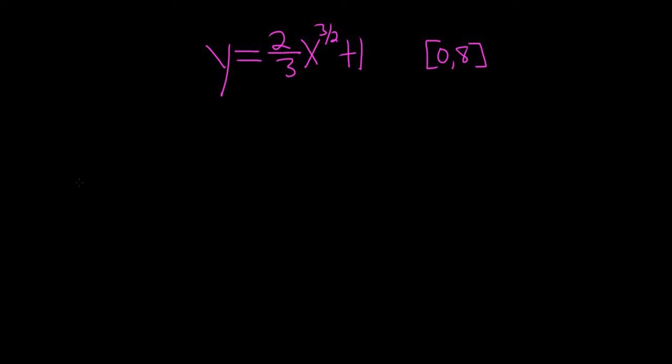In this problem, we have to find the arc length of this function from 0 to 8. So the formula that gives the arc length is little s is equal to the definite integral from a to b of the square root of 1 plus the derivative of y squared, and then we have a dx.